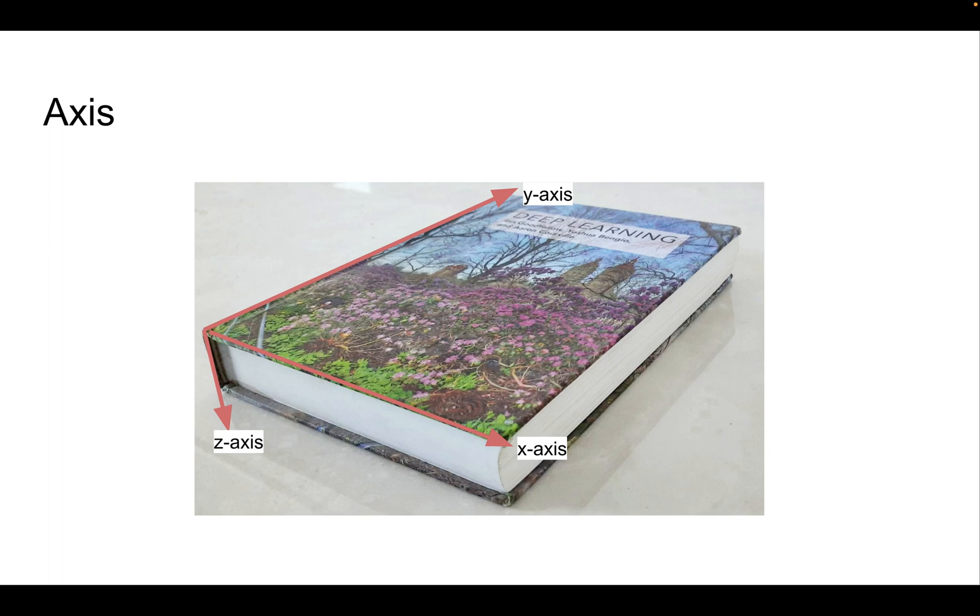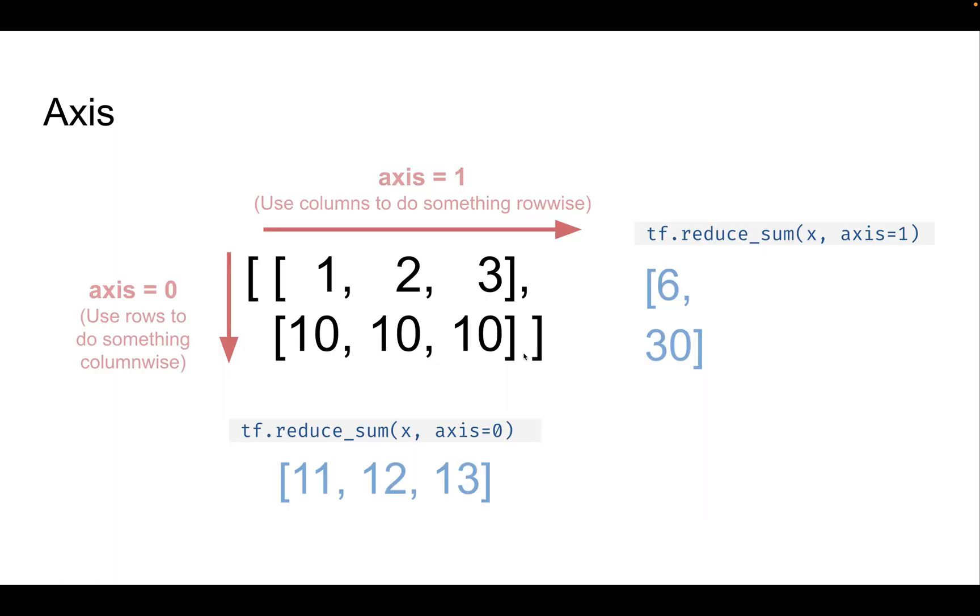Let's first look at axis. So here we have a book and as you already know, we can represent this by three axis X, Y and Z. Now if we look at a tensor or a matrix that we have shown here, this is a 2D matrix. So we have two rows and three columns. So the shape of this would be 2 comma 3 and it has two axis, axis zero and axis 1.